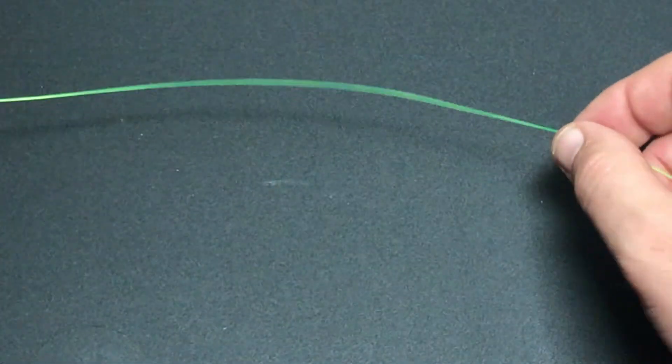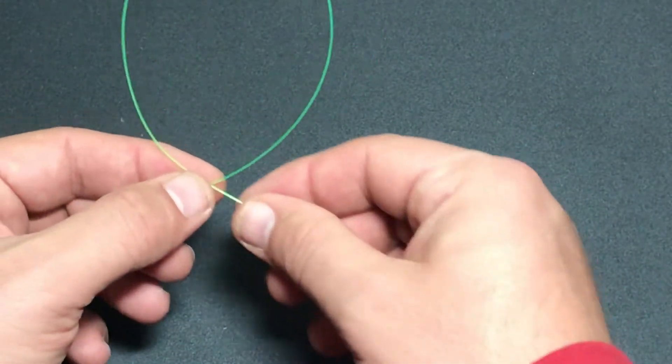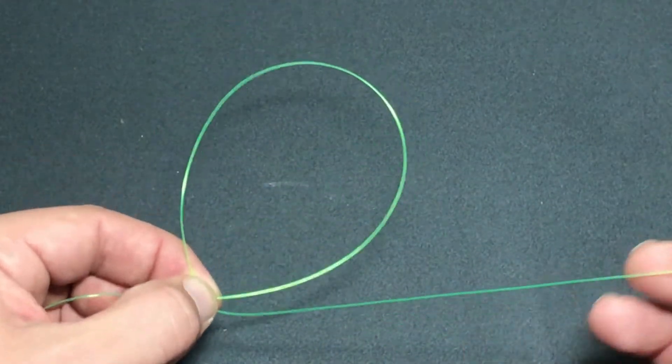So to start, I'm going to make a loop, and this loop at the very beginning is going to determine how big your dropper loop is going to be.